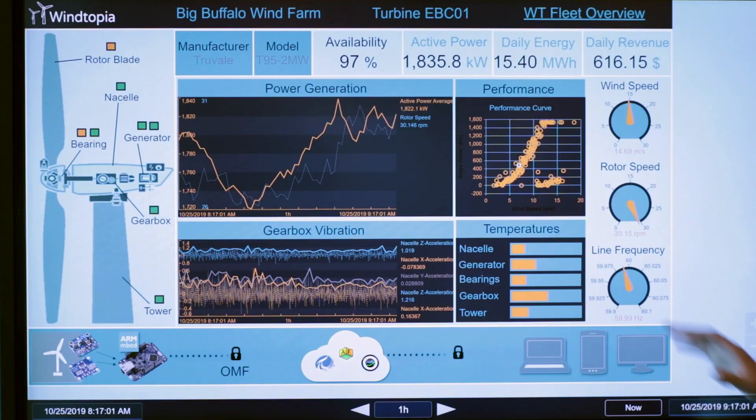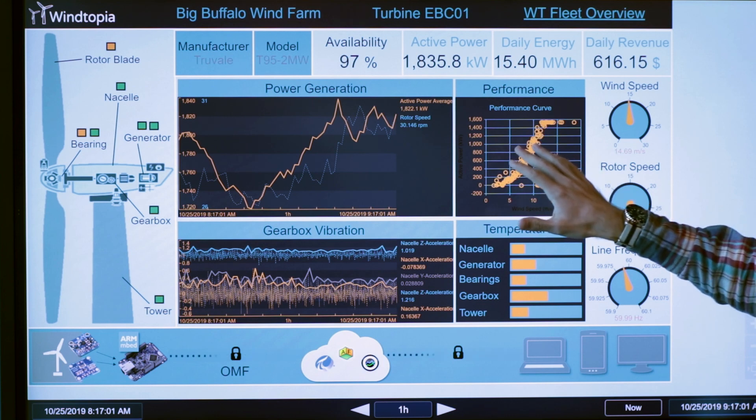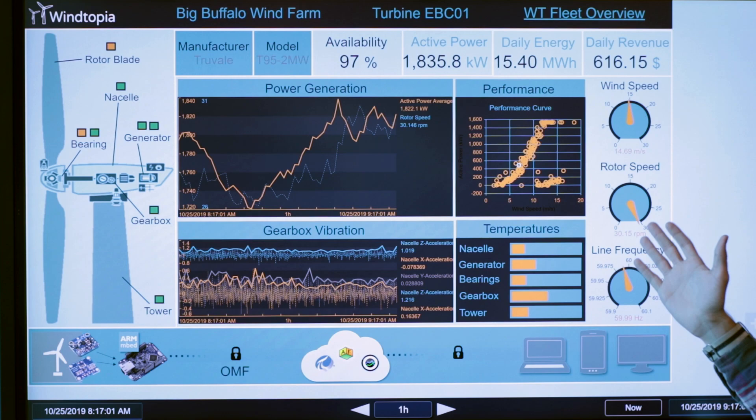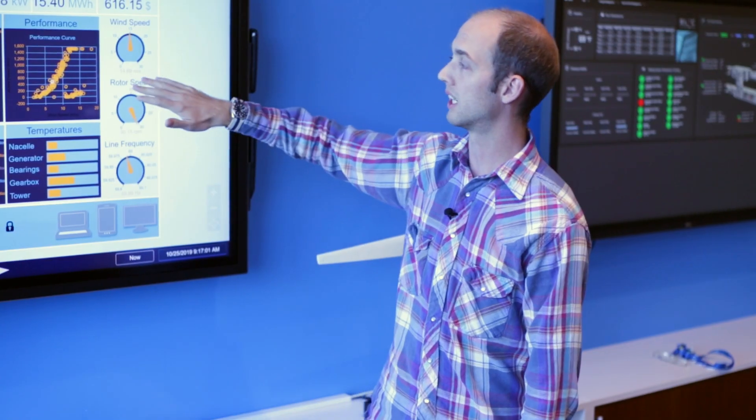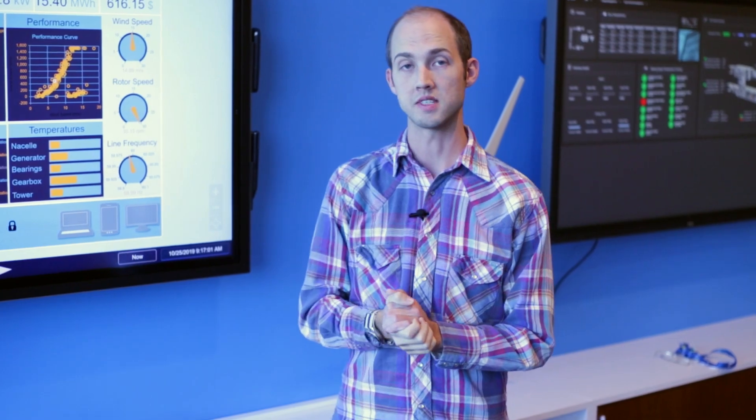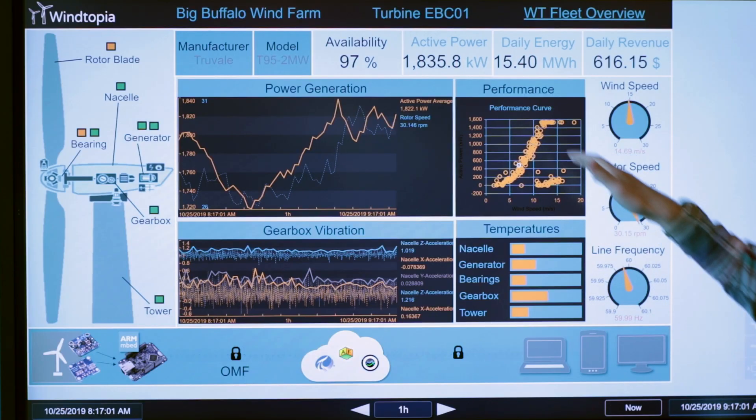Here we're looking at a PI Vision dashboard. We can quickly look at things such as power generation for the individual asset to understand how it's performing on a daily basis or hourly basis. We can quickly check how it looks on the performance curve to identify that the asset is performing as expected. Should it be outside this line or outside one of the bounds? Perhaps that's an indicator of an issue.